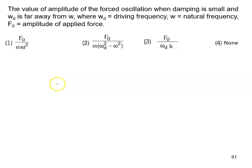Value of the amplitude of the forced oscillation when damping is small and driver frequency omega_d is far away from omega, where omega_d is the driving frequency, omega is the natural frequency, and F0 is the amplitude of the force.